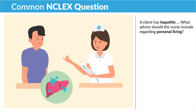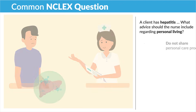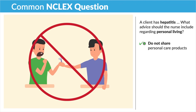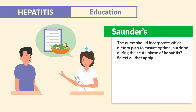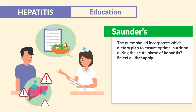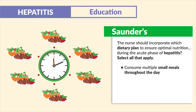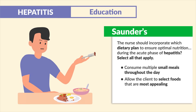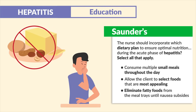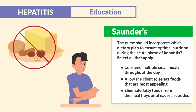A common exam question asks what advice the nurse should give a hepatitis client regarding personal living — the answer is 'do not share personal care products.' A Saunders dietary question asks which dietary plan ensures optimal nutrition during the acute phase: consume multiple small meals throughout the day, allow the client to select appealing foods, and eliminate fatty foods until nausea subsides.